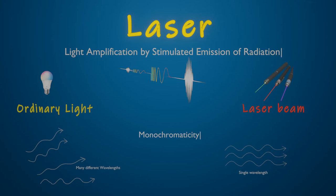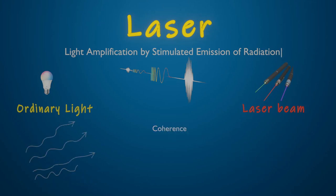The light from a laser is said to be coherent, which means the wavelengths of the laser light are in phase in space and time. To understand how a laser works, you first